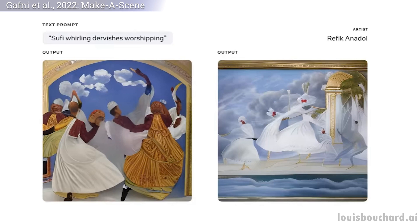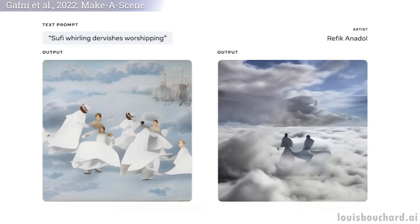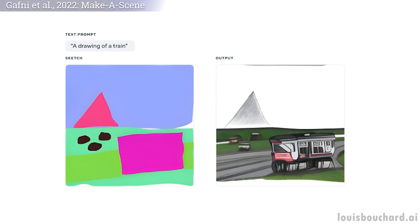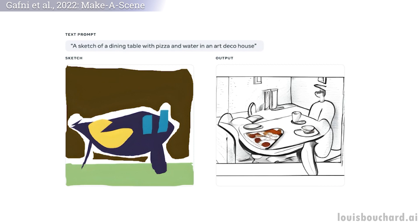Multimodal models are something super promising, especially if we match the quality of the results we see online, since we have more control over the results, getting closer to a very interesting end goal of generating the perfect image we have in mind without any design skills. Of course, this is still in the research state and is an exploratory AI research concept. It doesn't mean what we see is unachievable — it just means it will take a bit more time to get to the public.